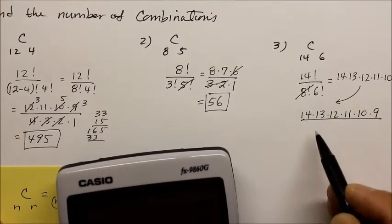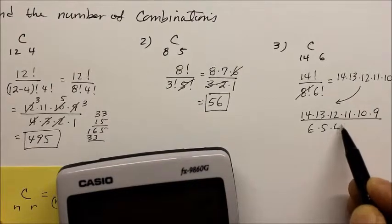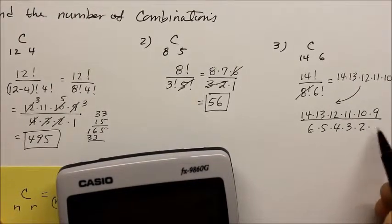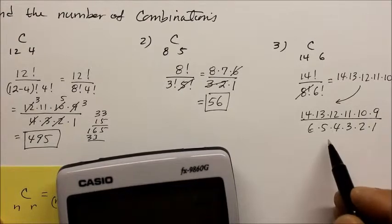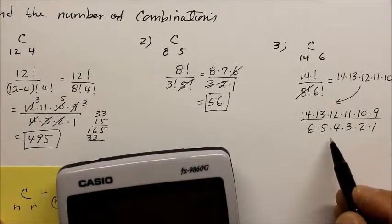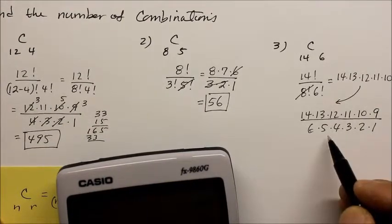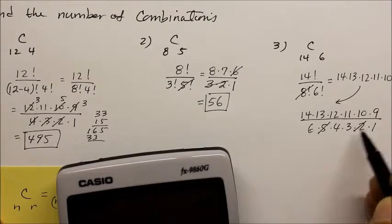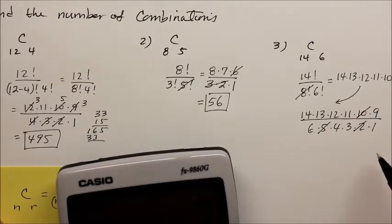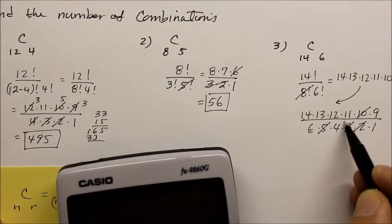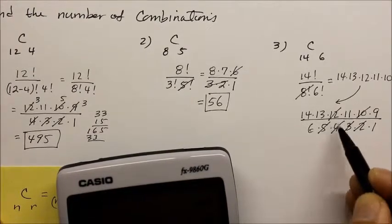And what we have on the bottom is 6, 5, 4, 3, 2, 1. Can we do this? Sure, why not. Let's see. 5 and 2 is 10, which simplifies out this 10. 3 times 4 is 12, which cancels out that 12.